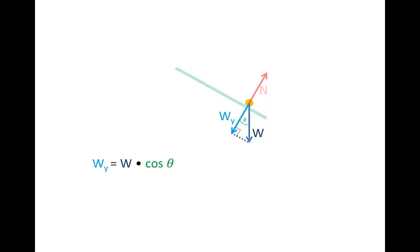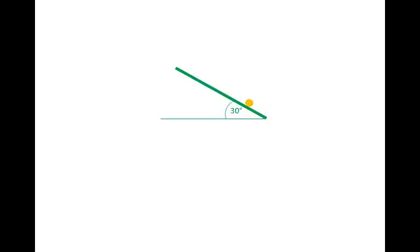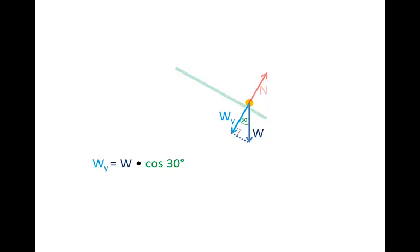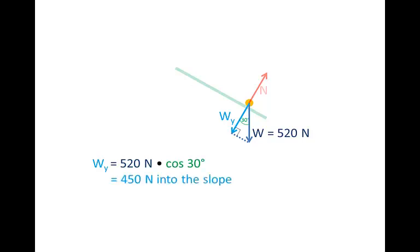Using trigonometry, you should be able to show that W-y is therefore equal to W cos theta. Let's say we have a slope angle of 30 degrees. Then the angle between W and W-y is also 30 degrees, and W-y equals W cos 30 degrees. Let's say that W is 520 newtons — maybe you're 52 kilograms. Your weight is 520 newtons if we round off. So W-y equals 520 newtons times cos 30 degrees, which gives 450 newtons.